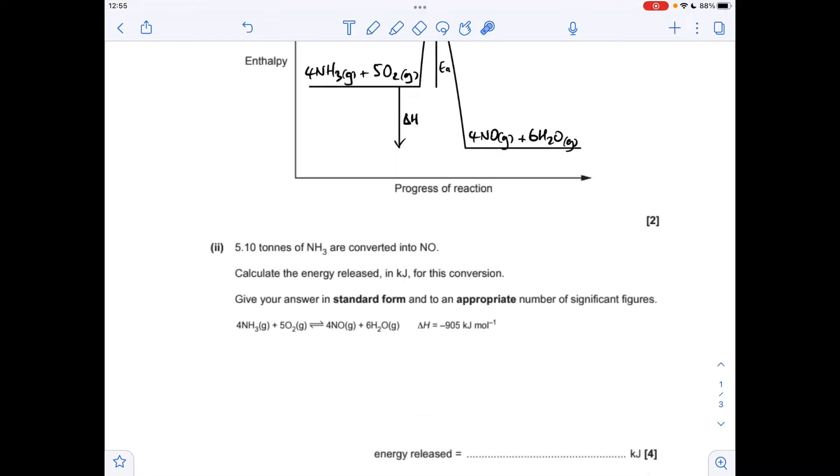So moving on to the calculation now, the first thing we've got to do is work out how many moles of ammonia we've got in 5.1 tonnes. And then if we think about the equilibrium itself, it involves 4 moles of ammonia, so per mole of ammonia it's going to release 9.05 divided by 4 kilojoules.